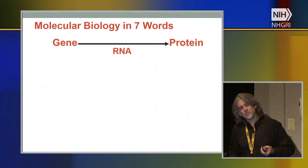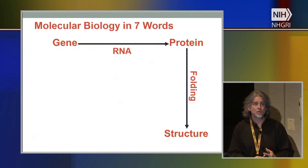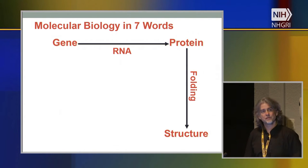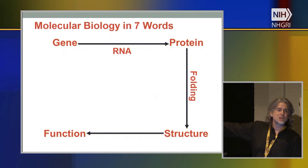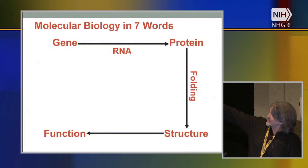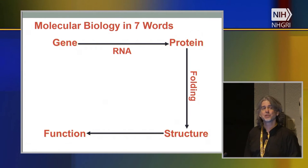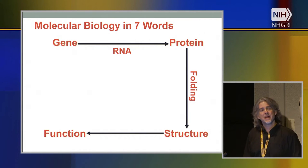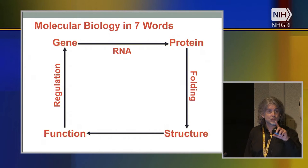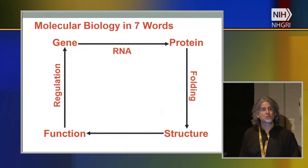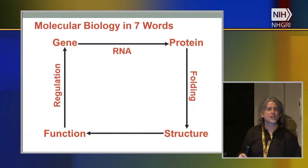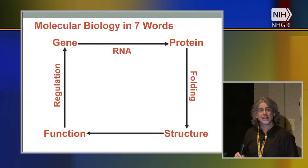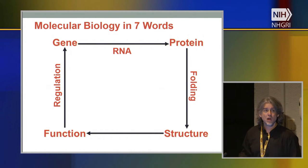Those proteins fold up into a three-dimensional structure, and that structure is fundamentally important because it dictates their function. The analogy I like to give: I can take a piece of metal and make a hammer or a wrench. While I might use the wrench to pound in a nail, I can never use the hammer to loosen a bolt. Structure matters, and it dictates function. Part of that function, for some proteins called transcription factors, is regulating the expression of other genes — that is, how much RNA is being made. So we have a really interesting closed loop, and at the end of this presentation I'll come back to the idea that this regulatory process is important for understanding biological systems.